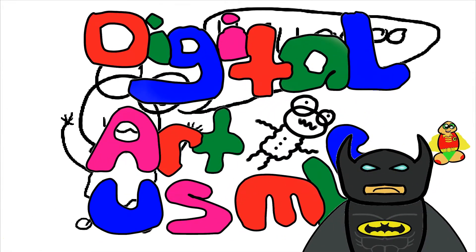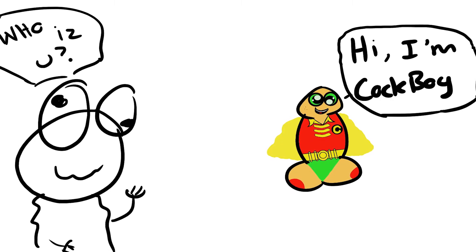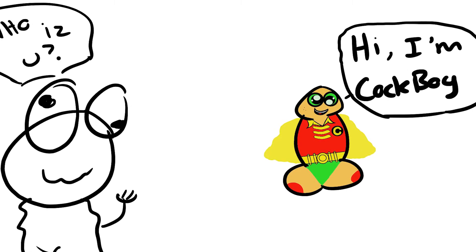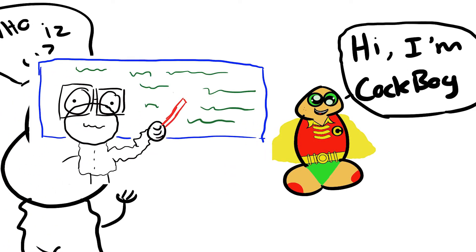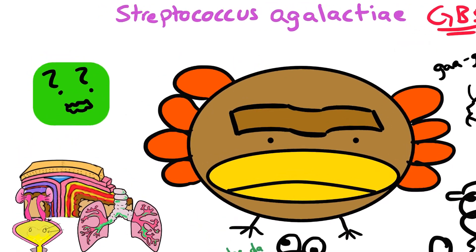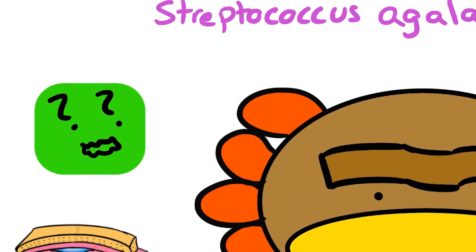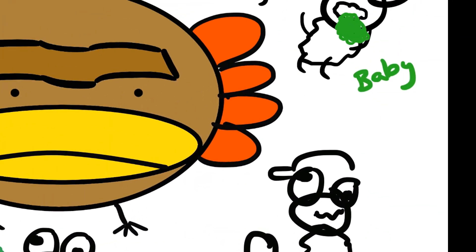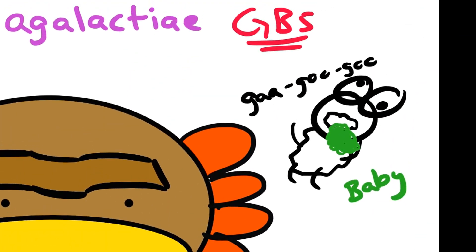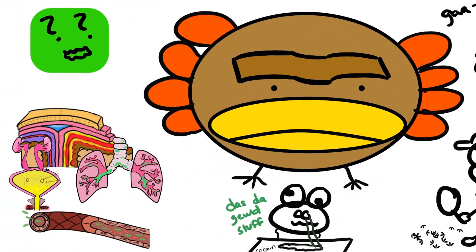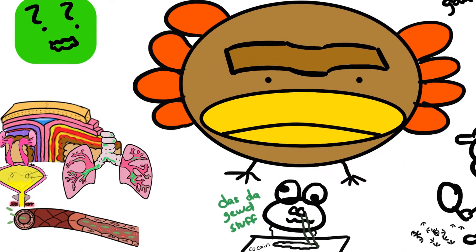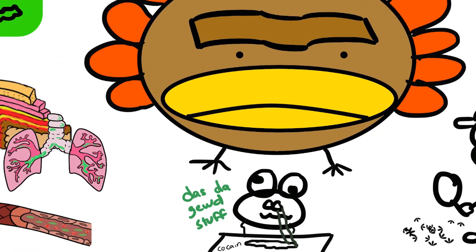Welcome back to Digital Arts USMLE. Today we're going to be covering Streptococcus agalactiae. We'll begin by covering its characteristics, where it's normally found, who it affects, the organ systems affected by it, and the treatment options based on the type of infection.